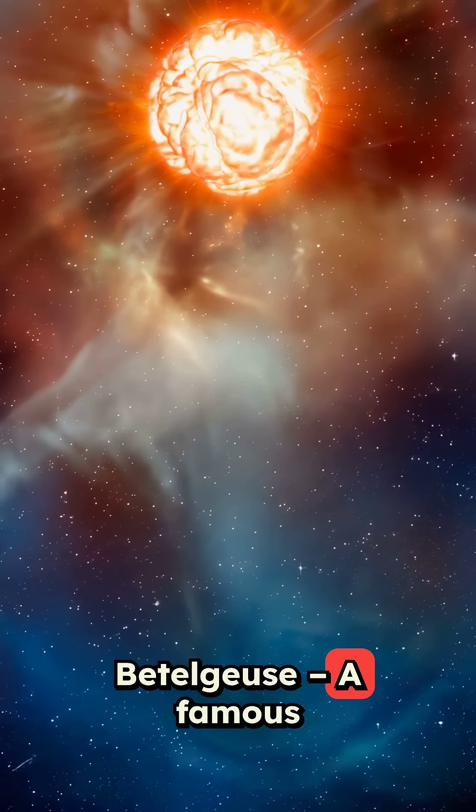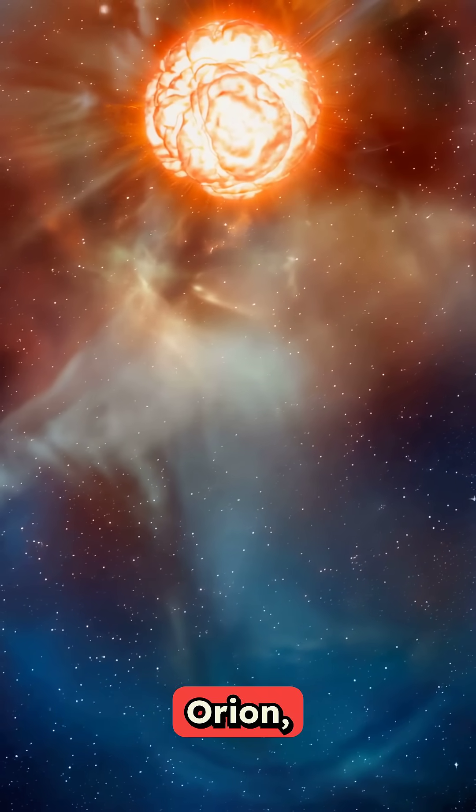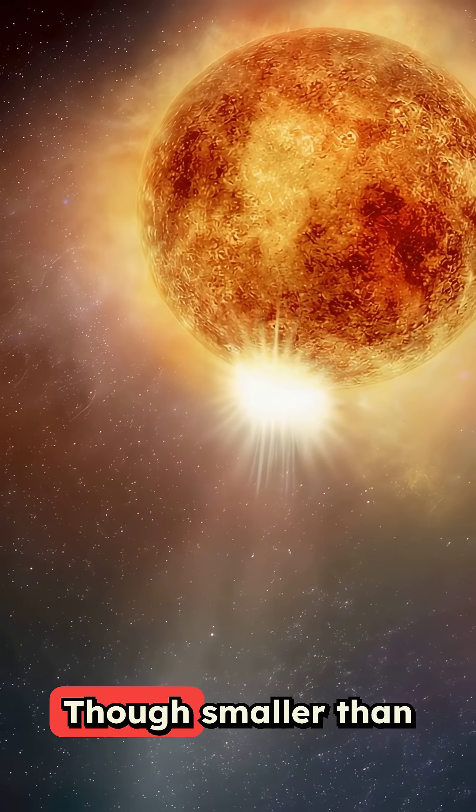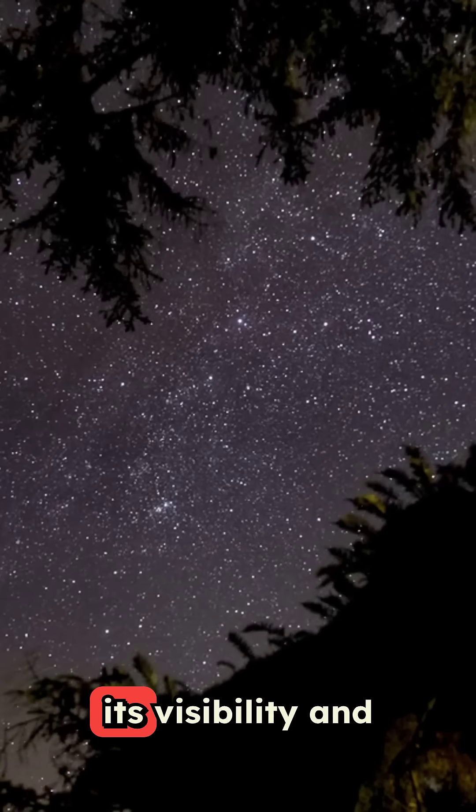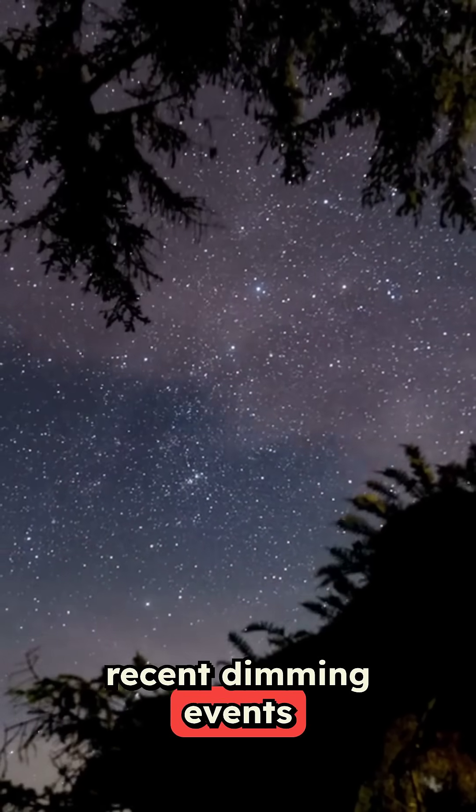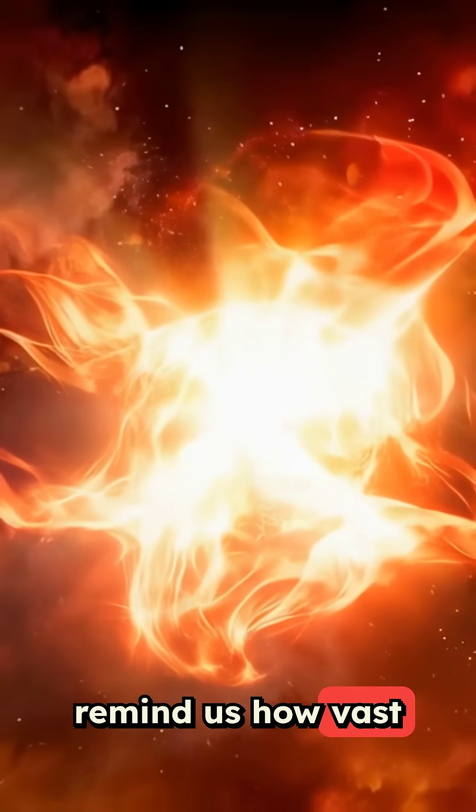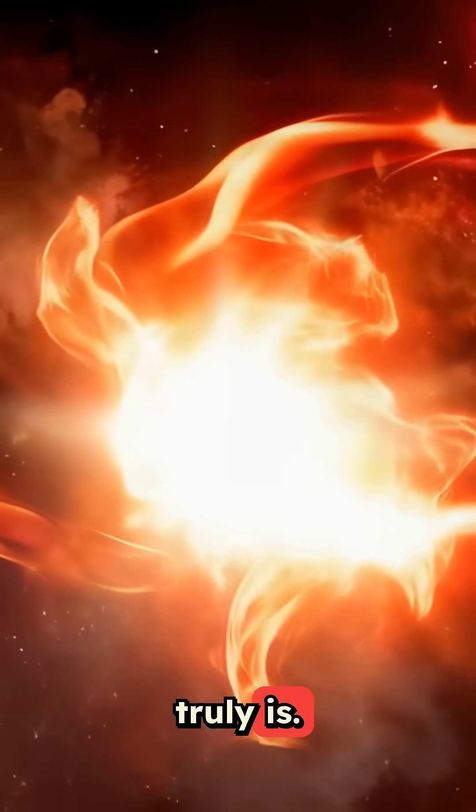Betelgeuse, a famous red supergiant in Orion, is about 1,000 times larger than the Sun. Though smaller than the others on this list, its visibility and recent dimming events have made it a star of great interest. These stellar giants remind us how vast and wild the universe truly is.